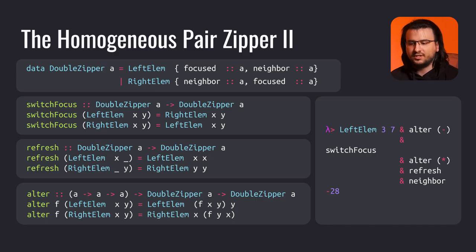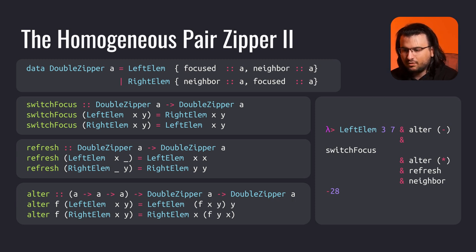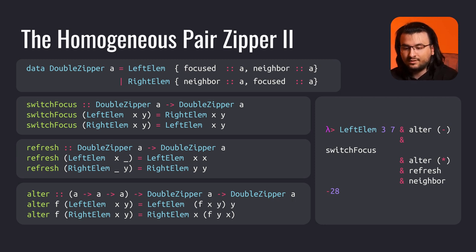The function switchFocus switches our focus to the other element without changing the order of the values. Refresh duplicates the focused value to the neighboring element. Alter updates the focused element with a binary operation whose first argument is the focused element and second argument the neighbor. In the example, we have a pair of 3 and 7, focused on 3. We subtract 7 from 3 to get negative 4 and overwrite the 3 with it. Then we switch focus to 7, replace it with 7 times negative 4, or negative 28. Lastly, we replace the neighbor with the focused value, getting negative 28 in the end.